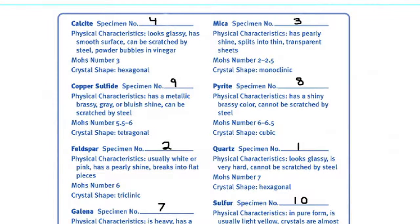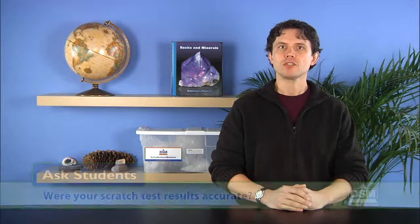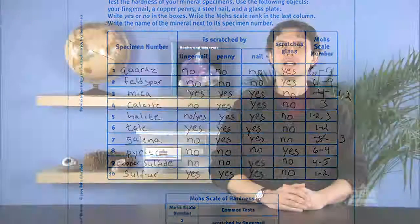Next, have each team compare the Mohs number that they assigned on activity sheet four to the actual Mohs number on the mineral data sheet. Ask students: were your scratch test results accurate? Students should not erase any answers that are incorrect. Instead, have them cross out any incorrect information and write in the correct information. Encourage students to learn from their mistakes rather than erase evidence of them.